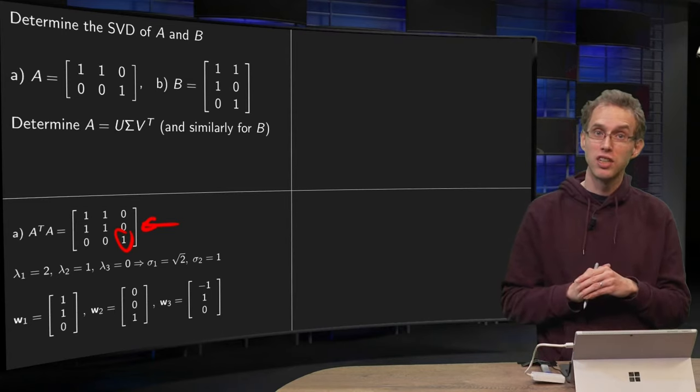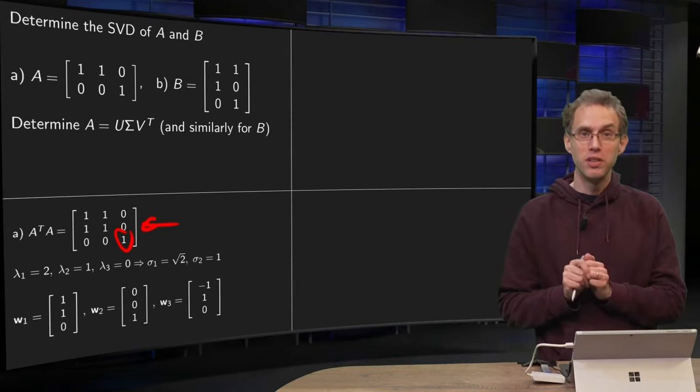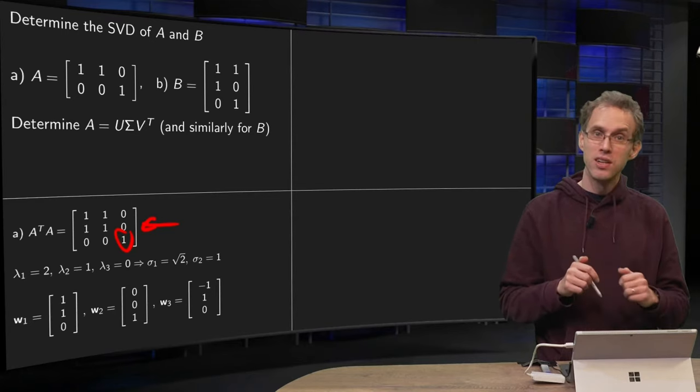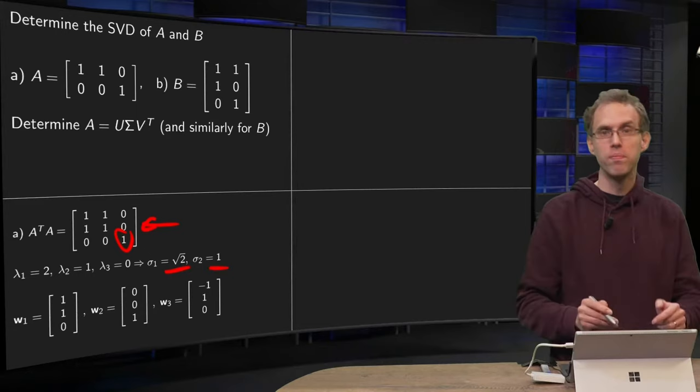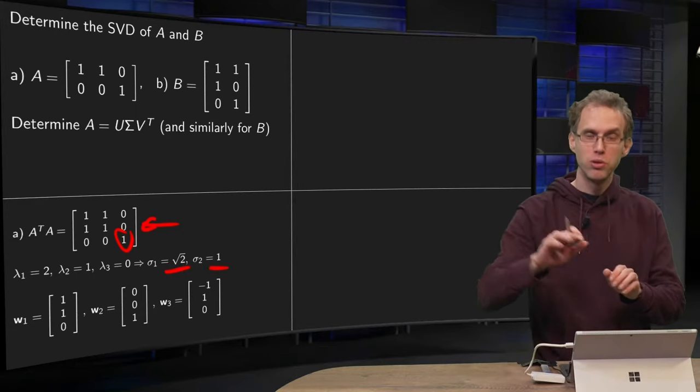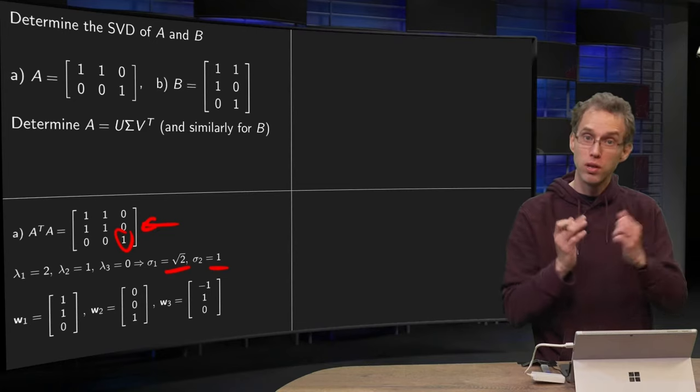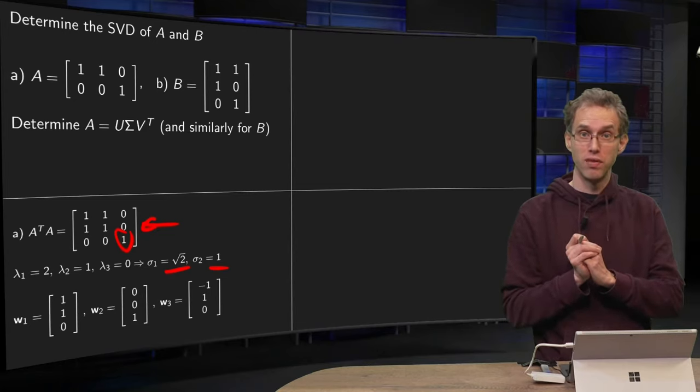If you want, you can use the characteristic equation as well, of course, but this is a bit faster. So then the singular values will be the square root of 2 and 1 and 0, but we are not going to use that one. Only the square root of 2 and 1. We only use the non-zero singular values.